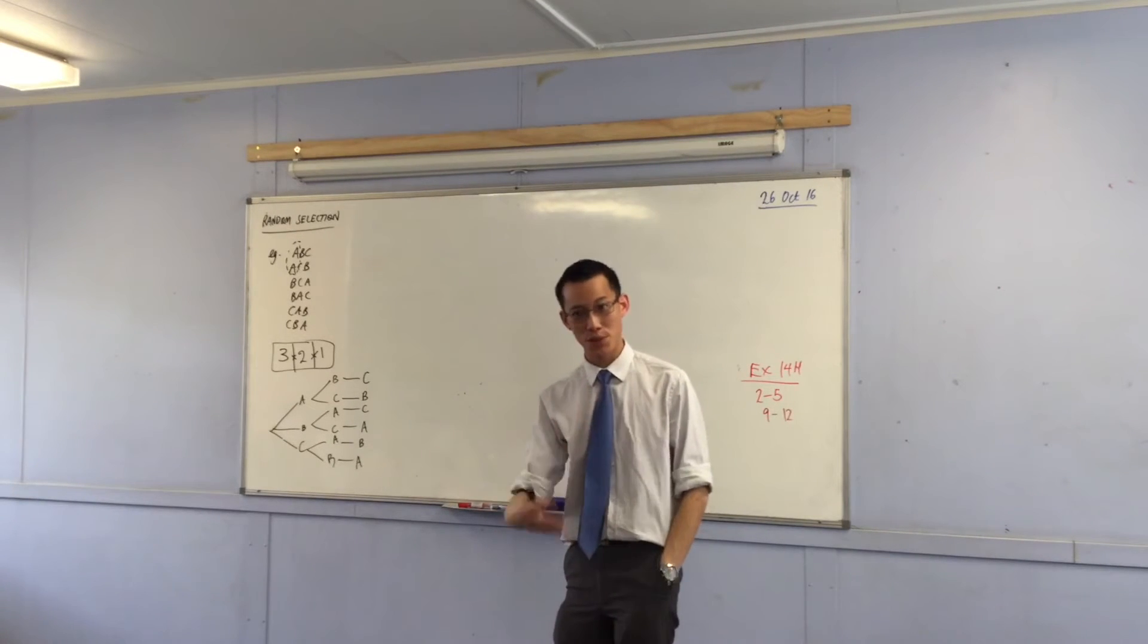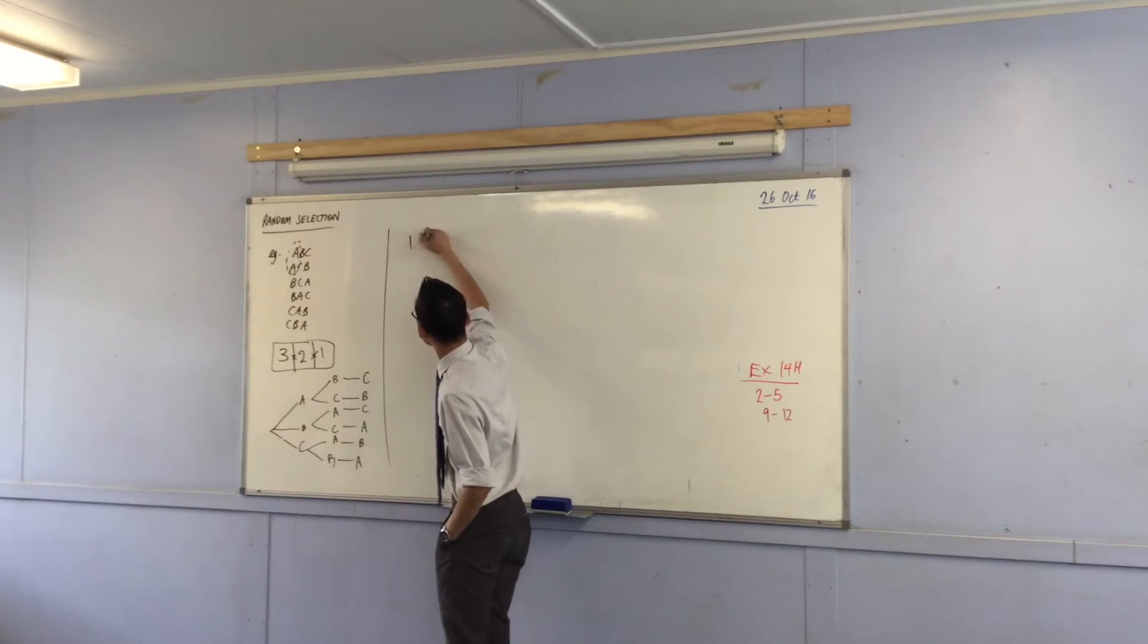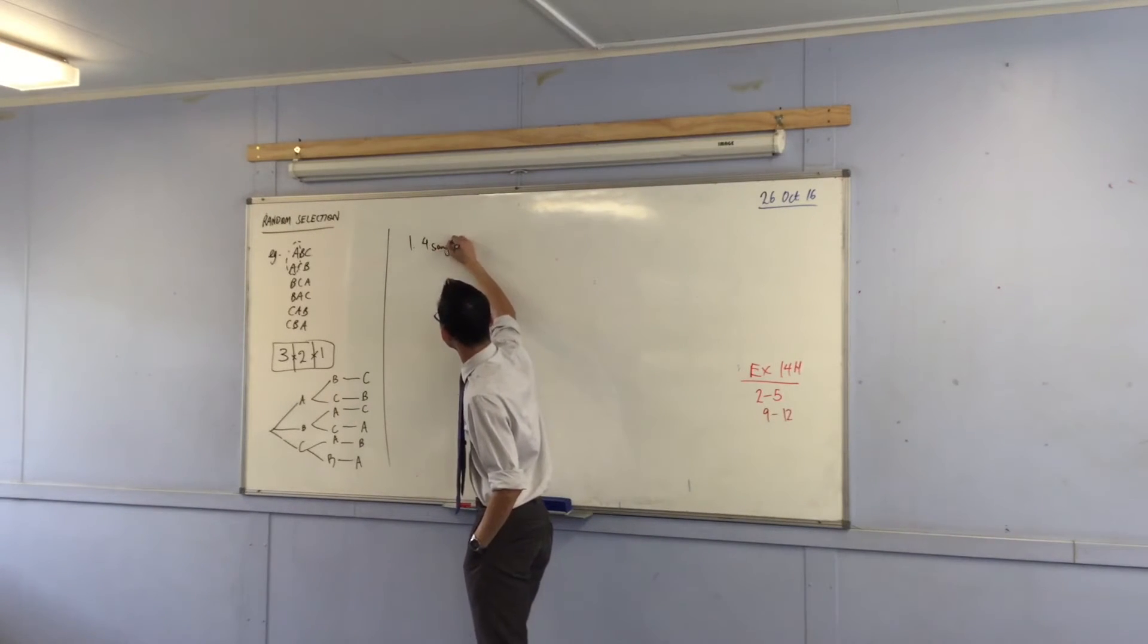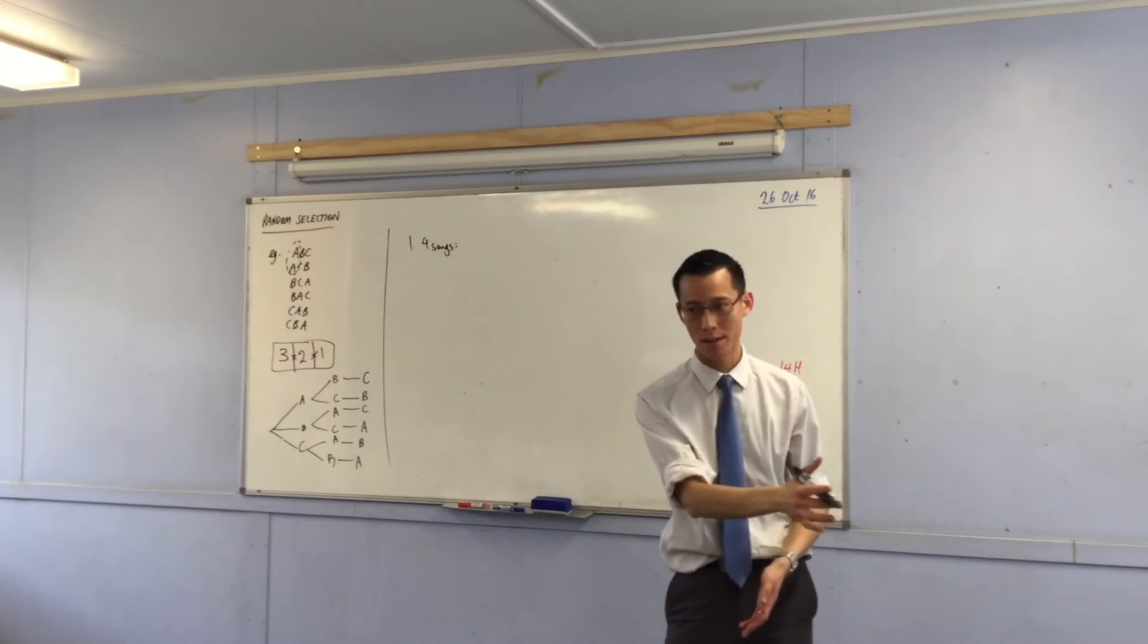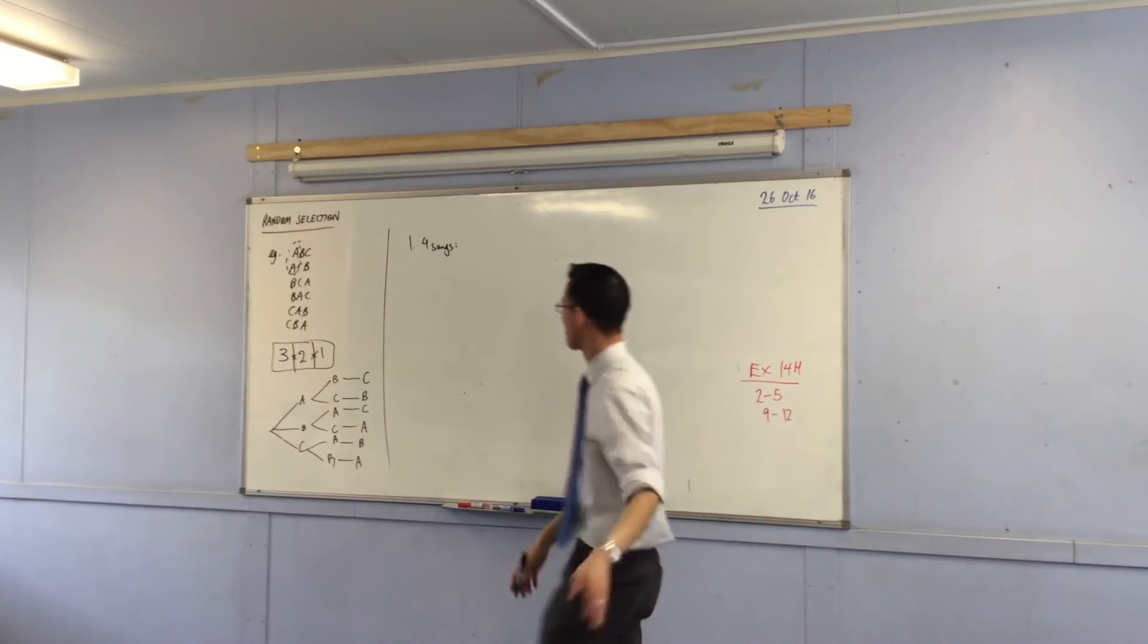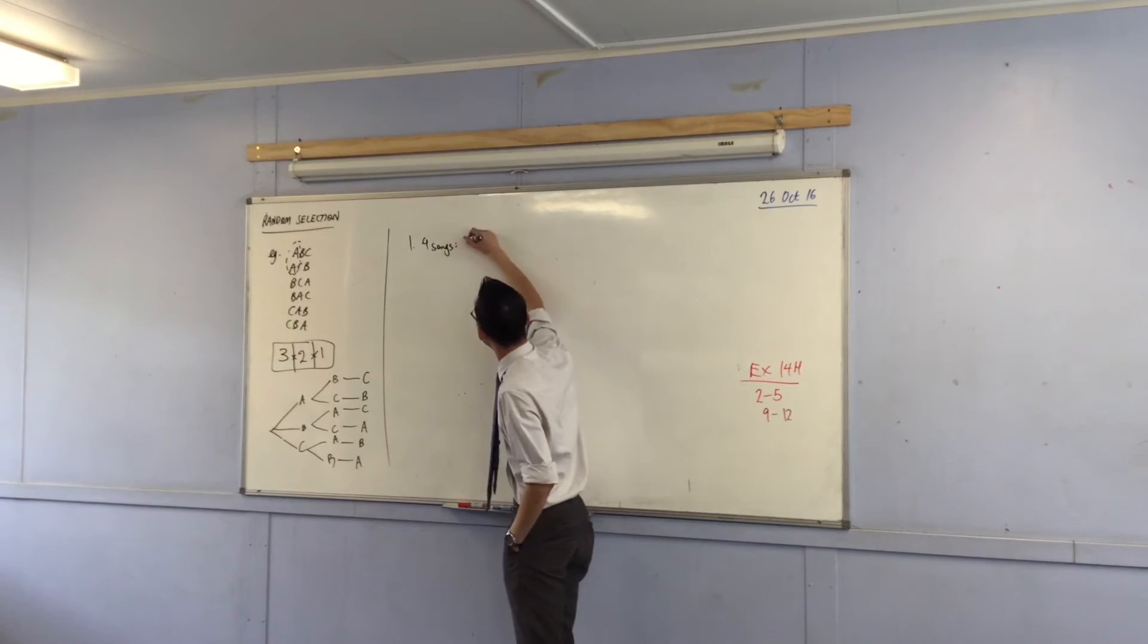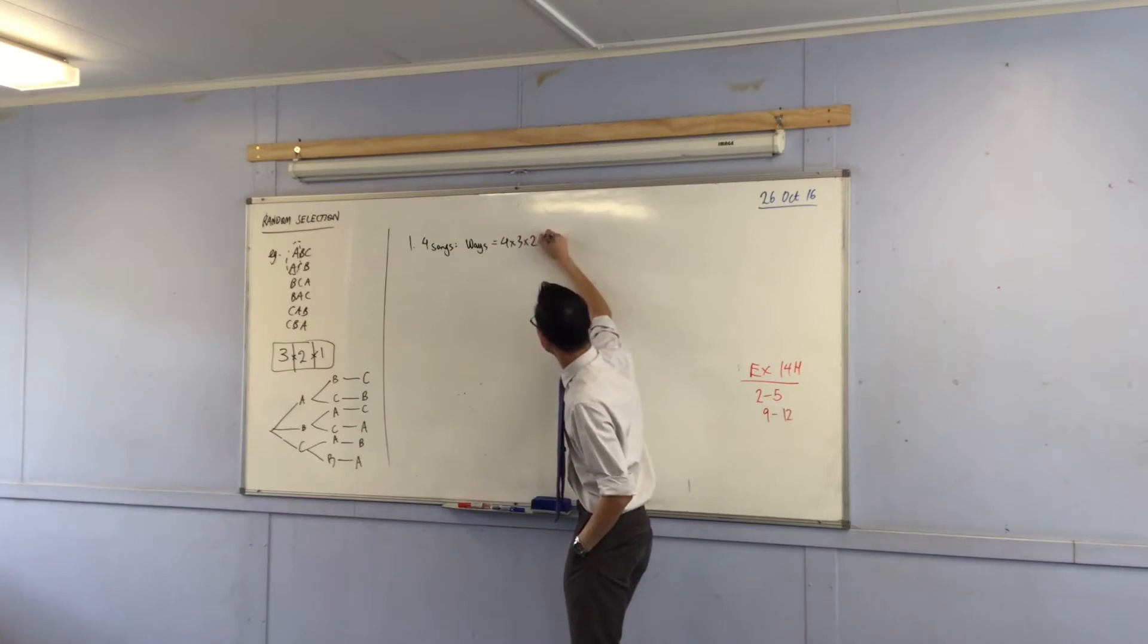So now, without having to draw the tree because it would take you forever. For question one, if there are four songs, then what's the total number of ways you can arrange your playlist? It's not three times two times one. It's four times three times two times one.